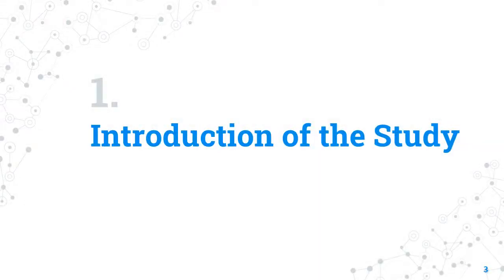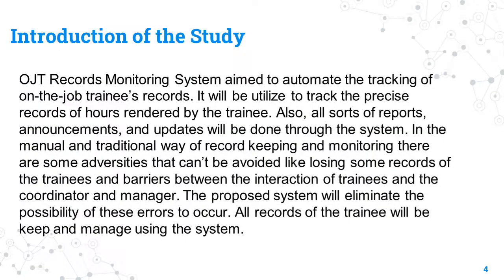The first part of Chapter 1 is the introduction of the study. The OJT Records Monitoring System aimed to automate the tracking of on-the-job trainees' records. It will be utilized to track the precise records of hours rendered by the trainee. Also, all sorts of reports, announcements, and updates will be done through the system.